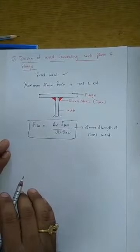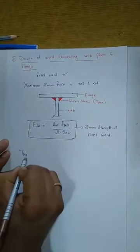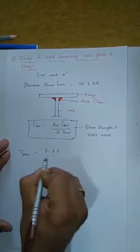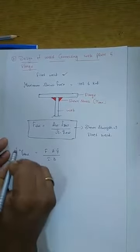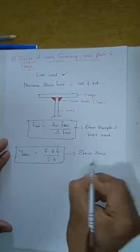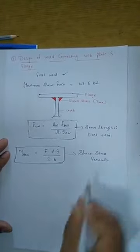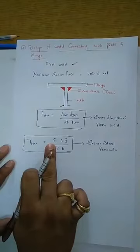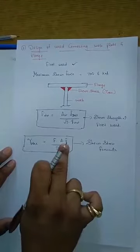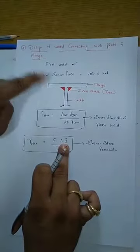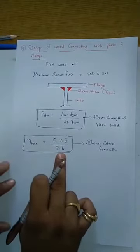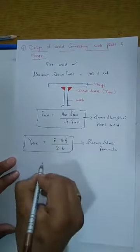Before calculating the shear strength, first calculate the shear stress acting at the joint. The shear stress formula is: τ = F × A × ȳ / (I × B). What is F? Shear force. What is A? Shear area. What is ȳ? Depth of shear area from the neutral axis. What is I? Moment of inertia of the I-section. What is B? Width of the flange.